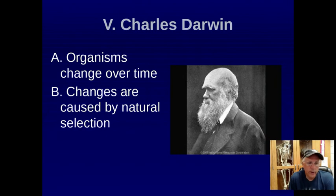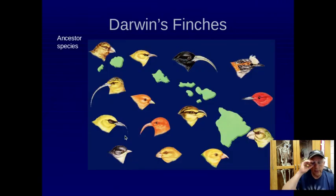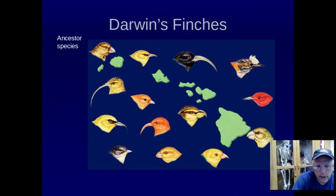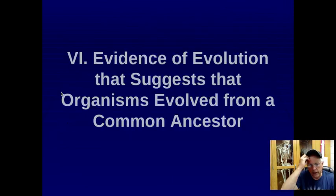Charles Darwin talked about organisms changing over time, and these changes occur by natural selection. That five-part theory — the survival of the fittest — is what's important: the ones that had the best traits survived and passed those traits on. So what are some things thrown out there as evidence? Let's look at his finches. He noticed that these finches were only found in the Galapagos Islands — you don't find them anywhere else in the world. The thought is they came from an original ancestor from the mainland and then evolved into all these different birds.